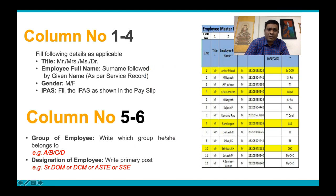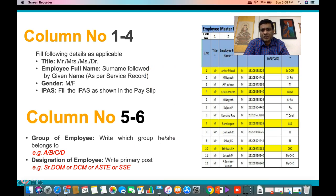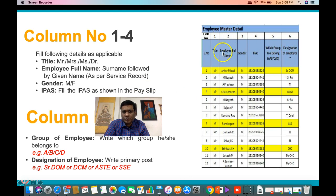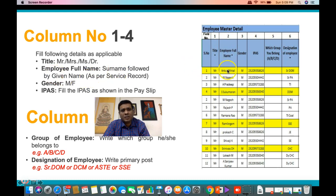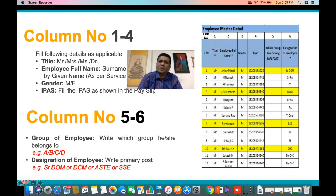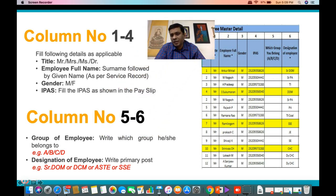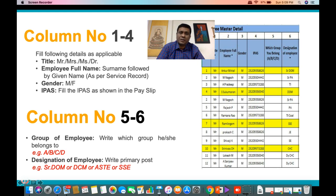Column 1 is the serial number, and Column 2 is the title. For the employee full name, give the surname followed by the given name so that the name becomes unique. If you just mention 'Ramesh' or 'Sushil Kumar,' there may be two or three people with the same name. Please elaborate your name by giving surname followed by full given name so that your name becomes unique on the eOffice platform.